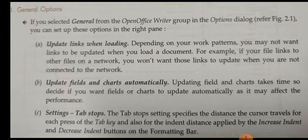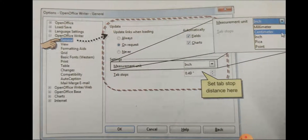The second thing is 'update fields and charts automatically.' Updating fields and charts takes time, so decide if you want fields or charts to update automatically as it may affect performance. Setting tab stops means when you press the tab key, you can set where the tab cursor should go.